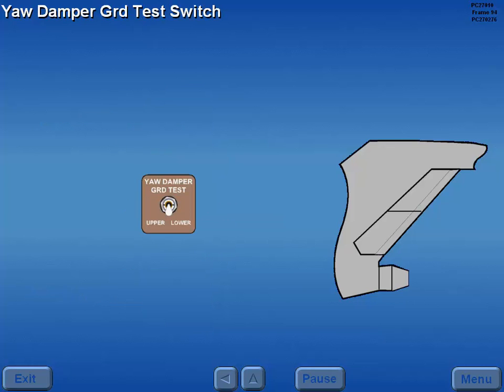The yaw damper ground test switch is used only by maintenance to test the system on the ground. Operation of the test switch in flight causes rudder movement.